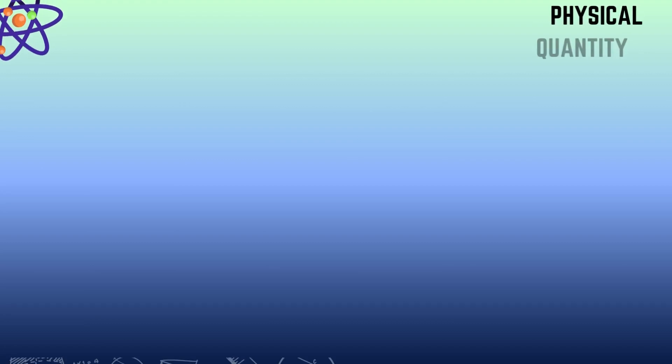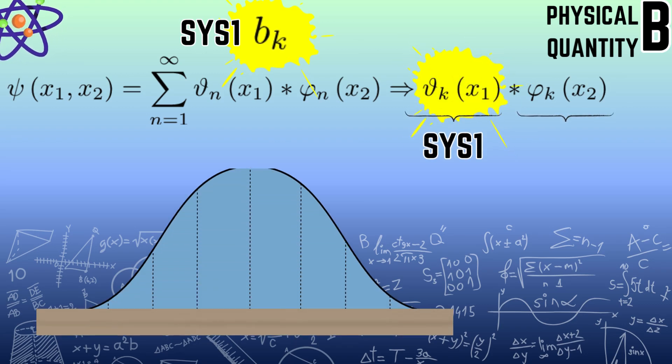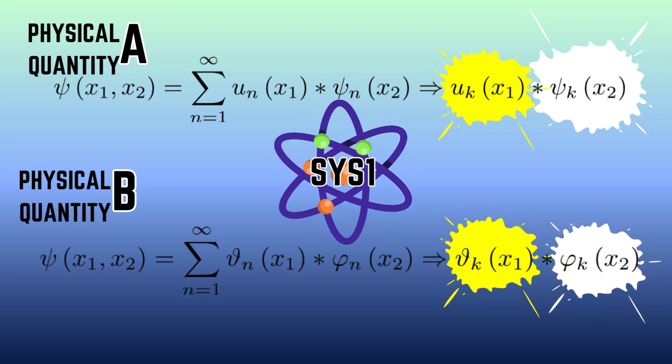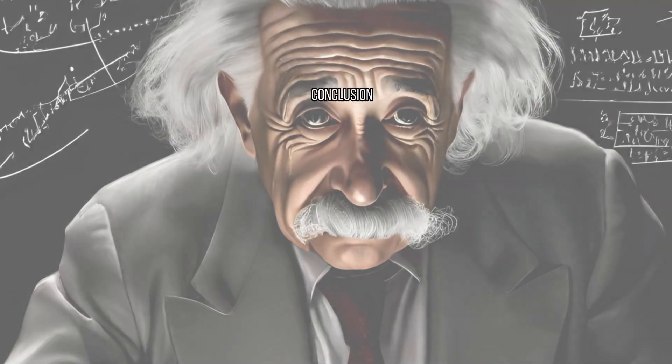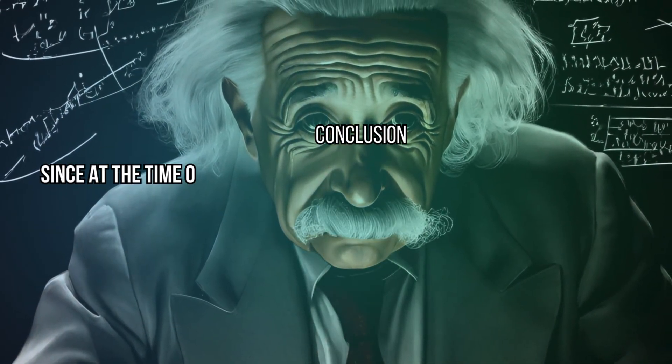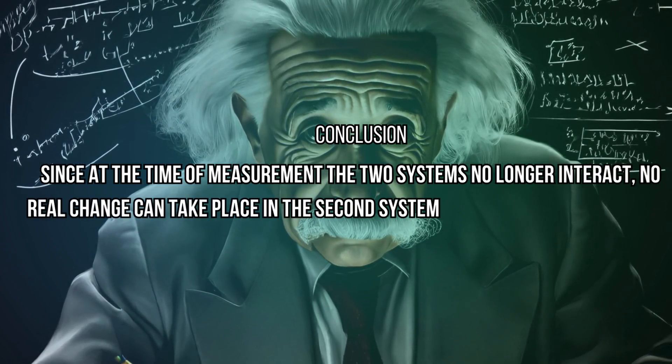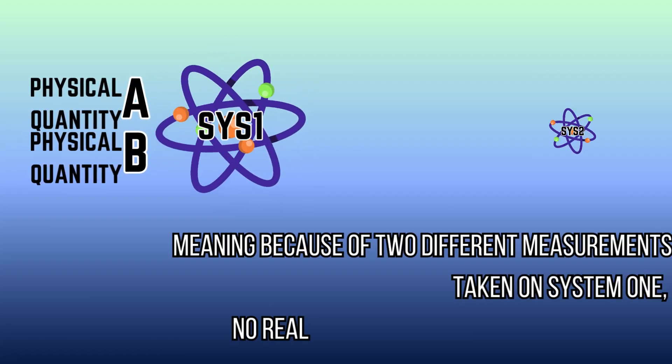Now upon taking a different physical quantity B to be measured on system 1, it would return a different eigenvalue and different eigenfunctions for both systems left in the state separately. We see therefore that as two different measurements performed upon the first system led to the second system left in the state with two different wave functions. This experiment was taken in a general way with respect to any operator. Therefore, Einstein concluded that on the other hand, since at the time of measurement the two systems no longer interact, no real change can take place in the second system in consequence of anything that may be done to the first system, meaning because of two different measurements taken on system 1, no real change can be seen on system 2.